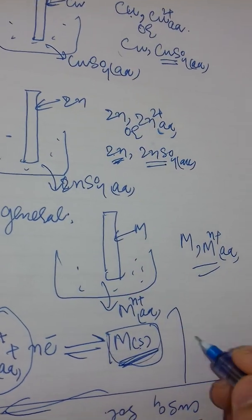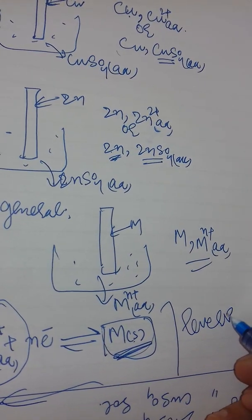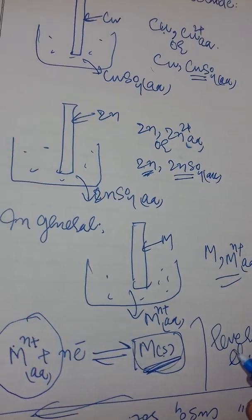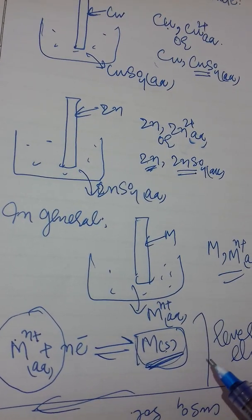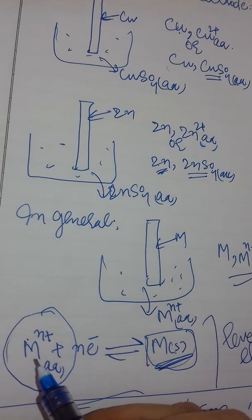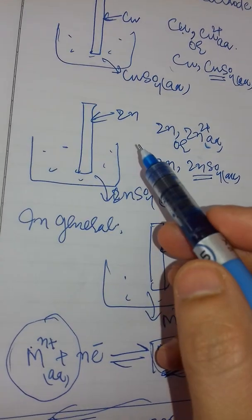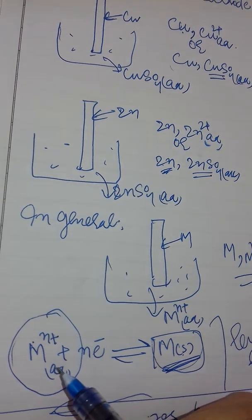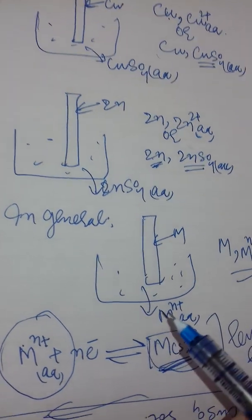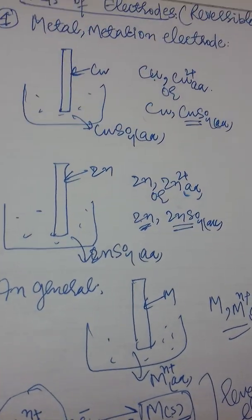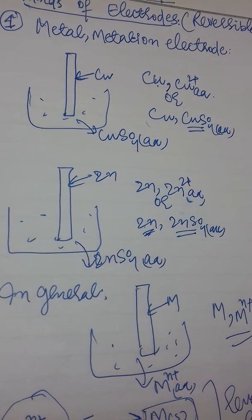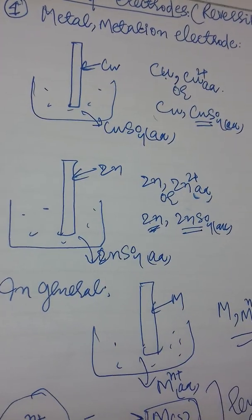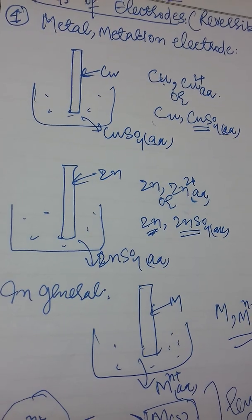So we can say it is a reversible electrode with respect to M^n⁺ ions — whether it's Cu²⁺ in the case of copper, or Zn²⁺ in the case of zinc. This is the simplest electrode. Let's read another one.